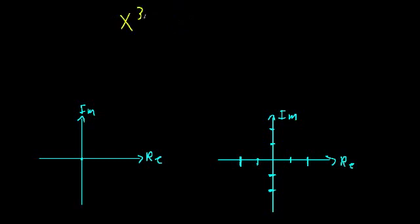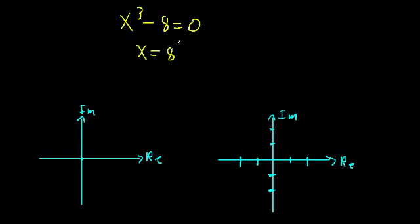Let's look at x cubed minus 8 is equal to zero. We want to find out what the solutions for x are. You may think this is fairly easy — we just add 8 to both sides, take the cubed root of both sides, and we get that x is equal to 8 to the one-third power, which is just equal to 2. Done.